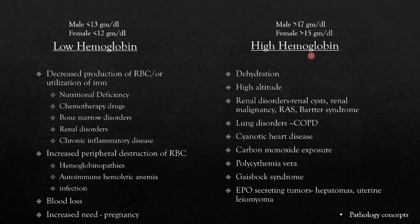High hemoglobin is defined as more than 17 g/dL in males and more than 15 g/dL in females. Causes include dehydration, high altitude, renal disorders (renal cyst, renal malignancy, Bartter syndrome), lung disorders like COPD, cyanotic heart disease, carbon monoxide exposure, polycythemia vera, Cushing's syndrome, and EPO-secreting tumors like hepatoma or uterine leiomyoma.